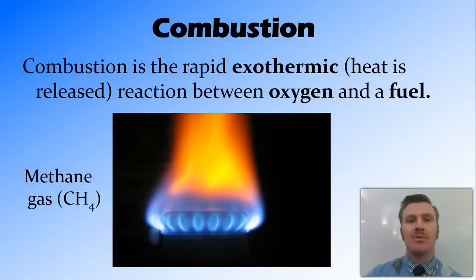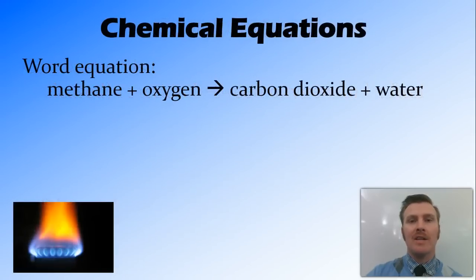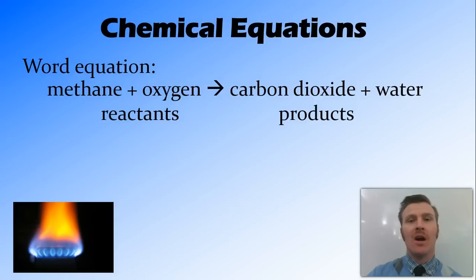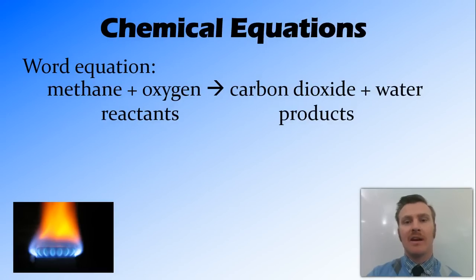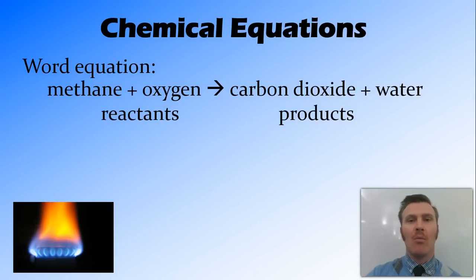This is through the reaction between the oxygen and the fuel, the methane. We can write this in a chemical equation. Firstly, we have the word equation: methane plus oxygen reacts to form carbon dioxide and water. On the left hand side we have the reactants, and on the right hand side we have the products. Between them we have an arrow, which symbolises that the reaction is occurring in this direction from left to right — not an equal sign, it is proceeding from one direction to the other.